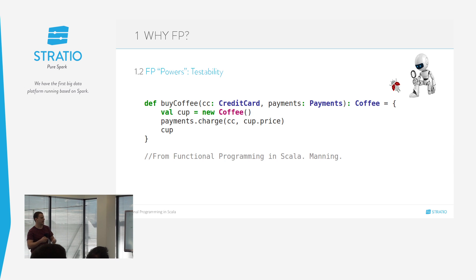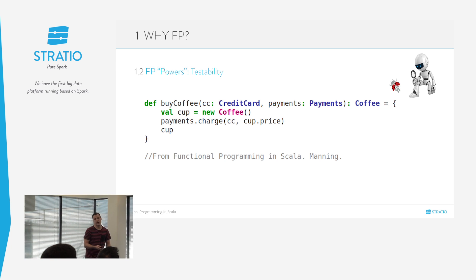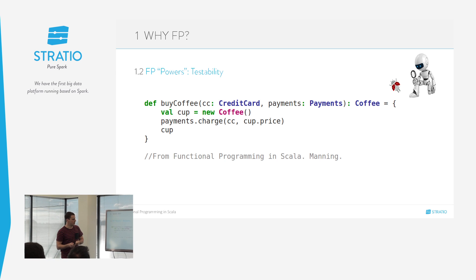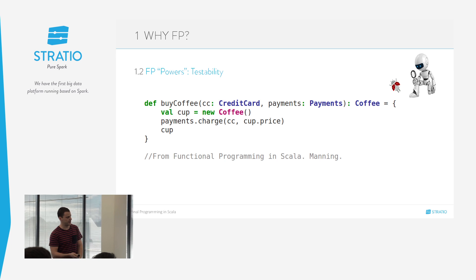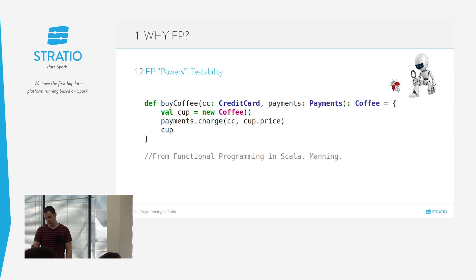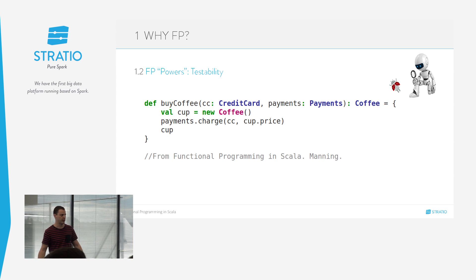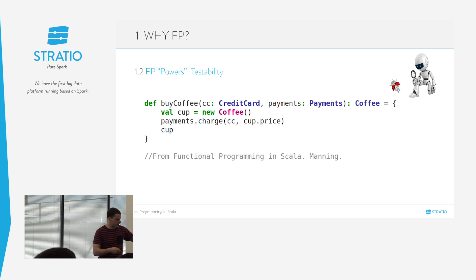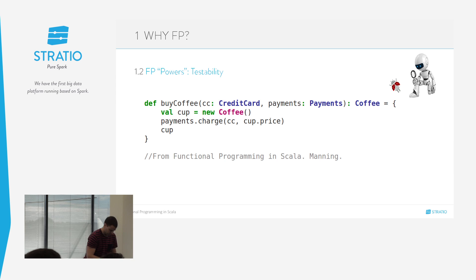Una posible solución sería crearnos un objeto Payments que podríamos moquear. Pero tendríamos que meter un framework de moqueo, y cuanto más pueda evitar moquear las cosas, mejor. Además, si queremos comprar diez cafés, tendríamos que hacer cargos al sistema de Payments cada vez que llamemos a este método.